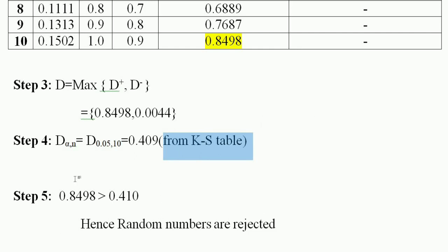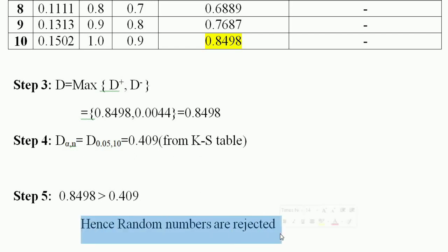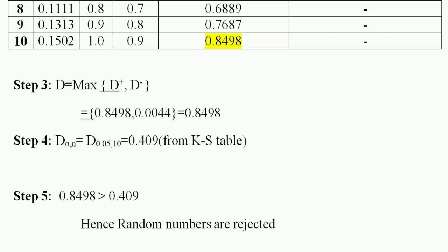In the final step, we check the hypothesis. The value of D is the maximum of D+ and D−, which is 0.8498. Since 0.8498 is greater than the critical value 0.409, the random numbers are rejected — that is, we reject the hypothesis.